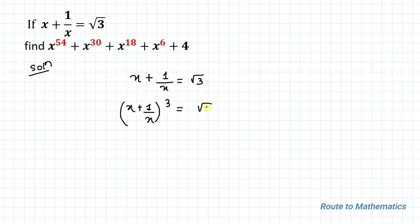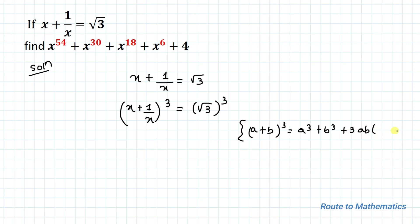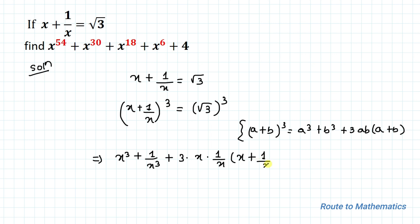Cubing both sides of the equation, we have (x plus 1 by x) whole cube equals to (root 3) cube. Here we'll apply the algebraic identity: (a + b)³ = a³ + b³ + 3ab(a + b). Applying this identity, we have x cube plus 1 by x cube plus 3 multiplied with x multiplied with 1 by x, whole multiplied with x plus 1 by x, equals to root 3 cube.